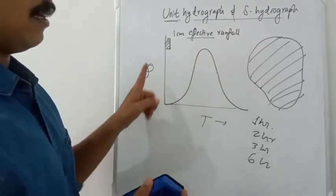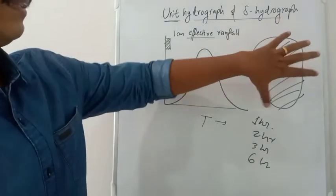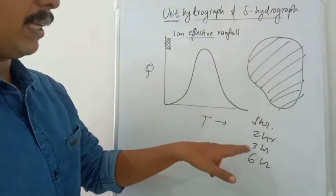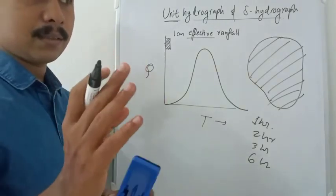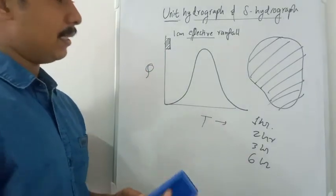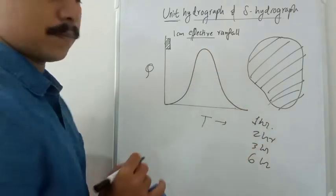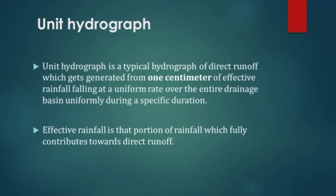A unit hydrograph is a typical hydrograph in which one centimeter of effective rainfall acts on a drainage basin distributed very uniformly over a specific period of time. It is a hydrograph of direct runoff generated from one centimeter of effective rainfall falling at a uniform rate over the entire drainage basin during a specific duration.